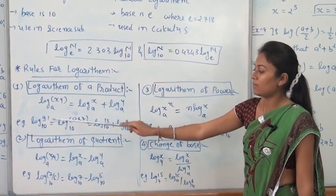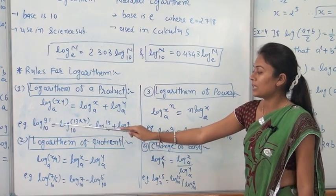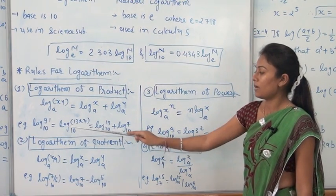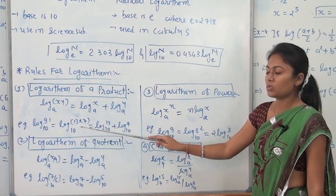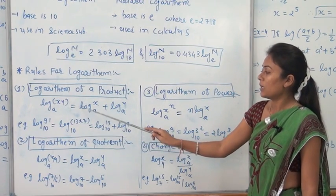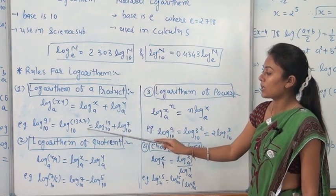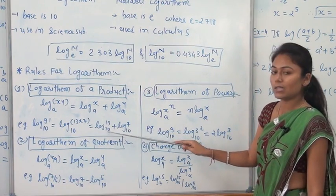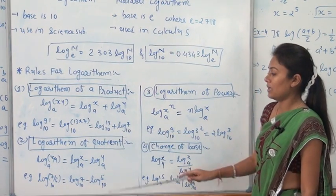Suppose we have log 91 base 10. We know that 91 is equal to 13 into 7. So it is equal to log of 13 into 7, base 10. By using the logarithm of product rule, we can write this as log 13 base 10 plus log 7 base 10.